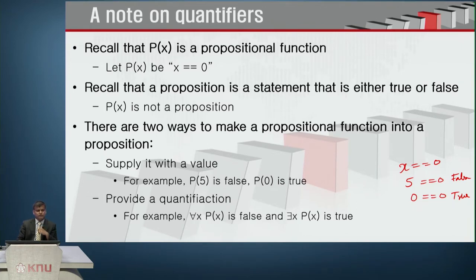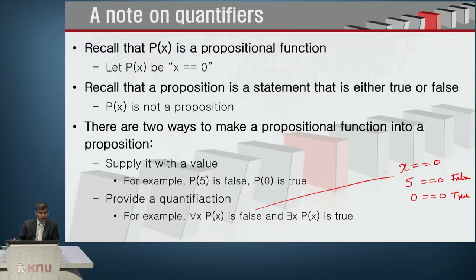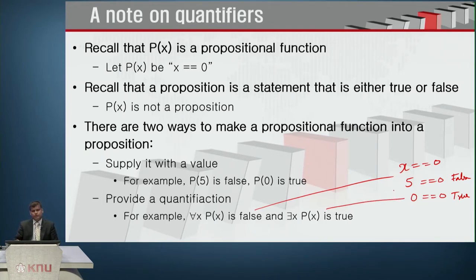The other way to make a propositional function into a proposition is to provide a quantification, which is what we saw in the previous lecture. We saw two quantification methods: universal quantifiers and existential quantifiers. For all values of x, p of x is false according to this function where x equals 0, but for some value of x it is true. In other words, there exists a value of x for which p of x is true.